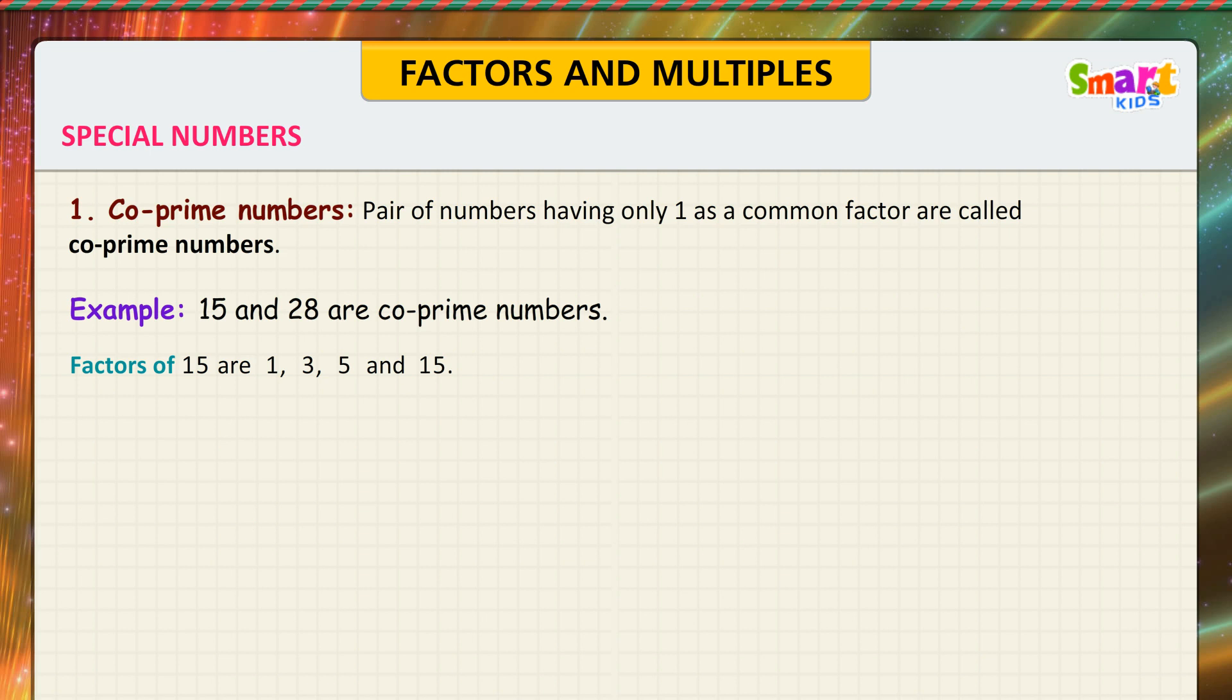Factors of 15 are 1, 3, 5, and 15. Factors of 28 are 1, 2, 4, 7, 14, and 28. 1 is the only common factor.